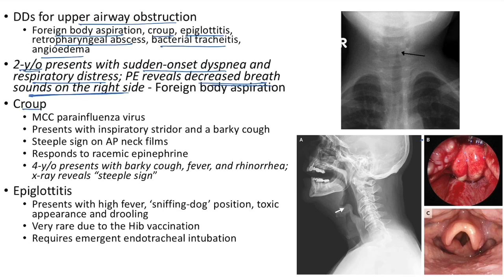Croup: most common cause is parainfluenza virus; also known as laryngotracheobronchitis. Presents with inspiratory stridor and barky cough. There will be steeple sign on AP neck films. It responds to racemic epinephrine. Clinical case: 4-year-old presents with barky cough, fever, and rhinorrhea; X-ray reveals steeple sign.